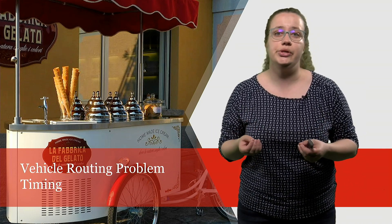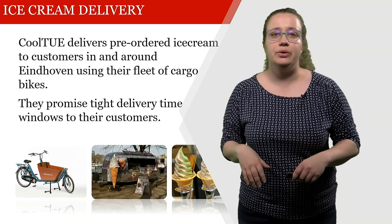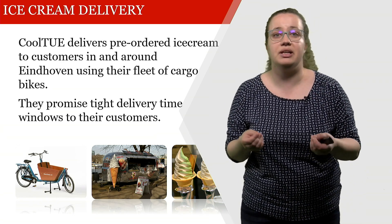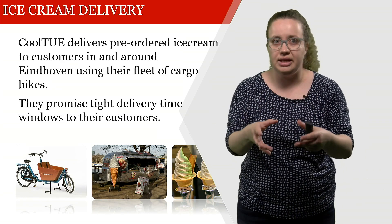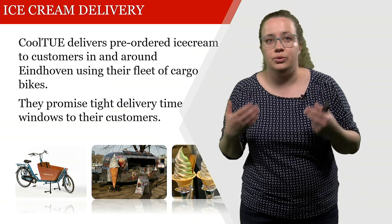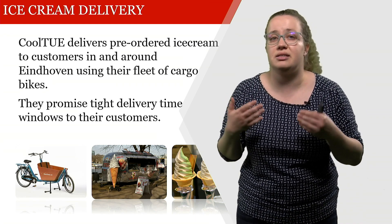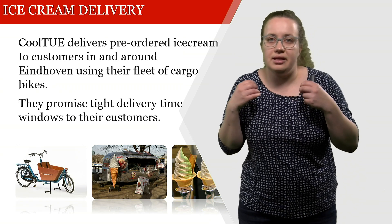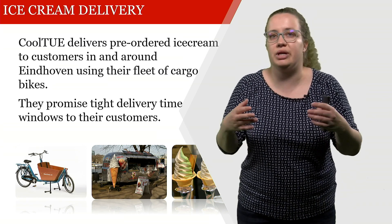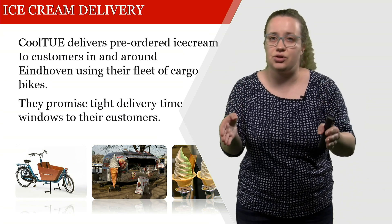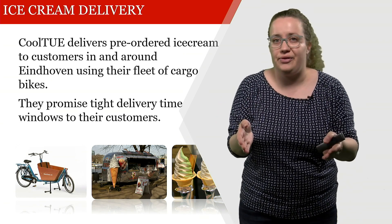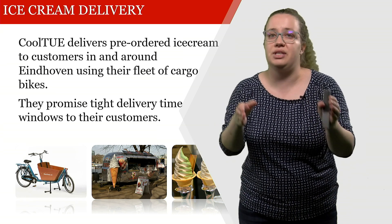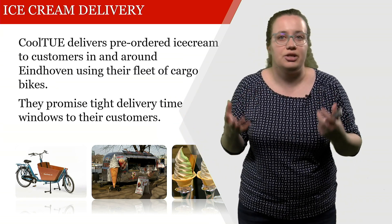For this we're going to continue using the example of CoolTOE. CoolTOE is a service that allows you to pre-order ice cream and then you get this ice cream delivered with one of the cargo bikes in the fleet of CoolTOE. CoolTOE promises extremely tight delivery time windows to their customers, because of course you need to be home at the point in time when you get your ice cream delivered. They don't want to place ice cream at your door for you to pick up five hours later — they want you to be able to directly put the ice cream into your freezer so that it actually remains cold.